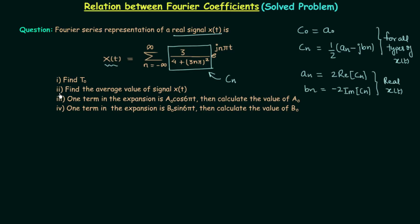In the second part we need to calculate the average value of the signal x(t). The third and fourth parts are very important. In the third part, one term in the trigonometric Fourier series expansion is A0 cos(6πt) — calculate the value of A0. Similarly, in the fourth part, one term in the expansion is B0 sin(6πt) — calculate the value of B0.